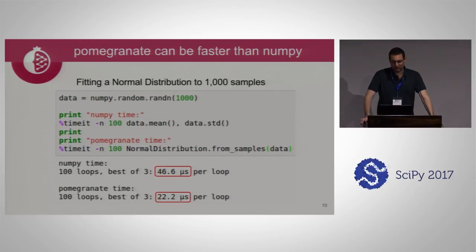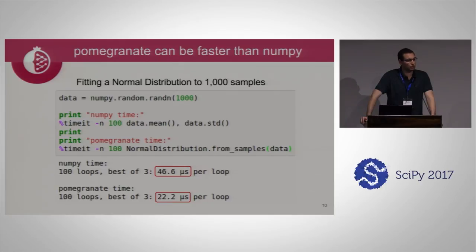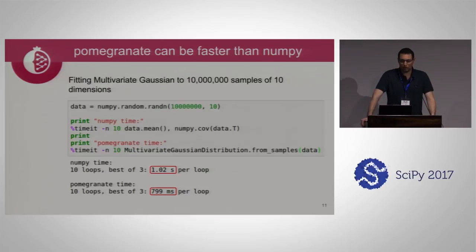Pomegranate can be faster than NumPy. For fitting a normal distribution to around a thousand samples, it's around twice as fast. The main reason is that NumPy tries to be as general as possible — calculating mean then standard deviation separately — whereas Pomegranate knows you're fitting a normal distribution, so it goes through the data more efficiently. This speed increase extends to larger models: fitting a multivariate Gaussian to 10 million samples with 10 dimensions is around 20% faster in Pomegranate than NumPy.